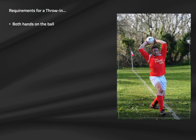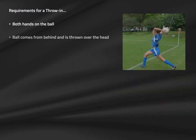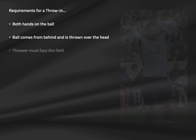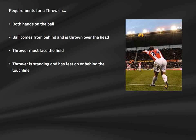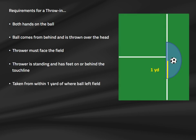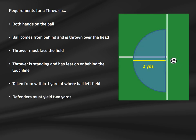There are six requirements for a legally taken throw-in: the ball must be thrown with both hands on the ball; it must start from behind and come over the top of the head; the player must face the field; both feet must be on or behind the touch line and on the ground; the player must be standing; and the thrower must take the throw from where the ball left the field, with about one yard of leeway unofficially. Opposing players must yield two yards from the thrower.